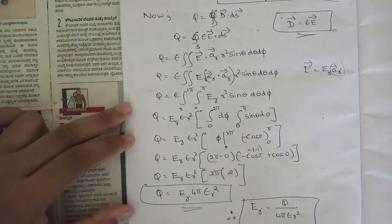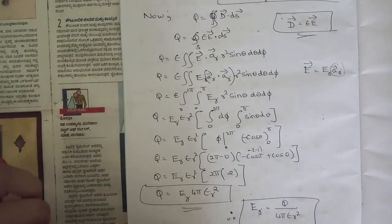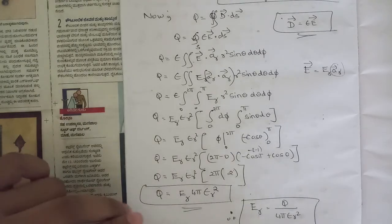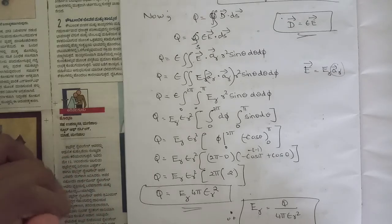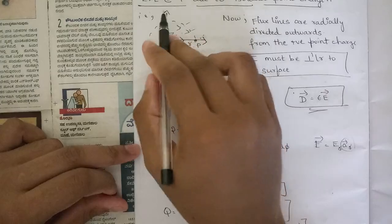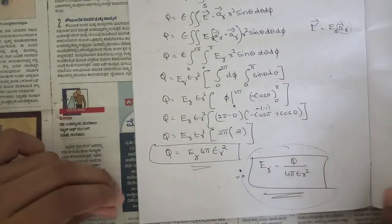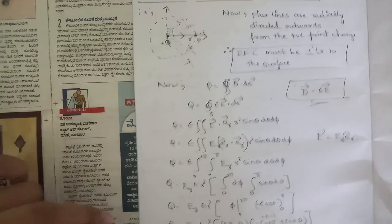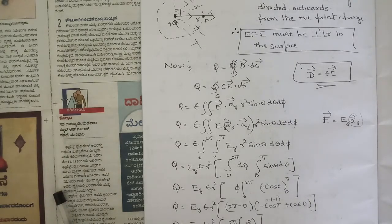In this session, we recalled Gauss's law — that the outward flux equals the charge enclosed within the closed surface — expressed as the closed surface integral of D dot ds, where D is the electric flux density. We also derived the electric field intensity at point P due to an isolated point charge. In the next session, we will continue with divergence, including definitions and key expressions.